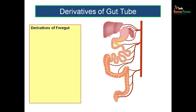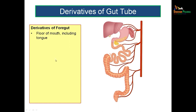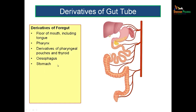Now let us see the derivatives of each part. The derivatives of the foregut include the floor of the mouth including the tongue, the pharynx, derivatives of the pharyngeal pouches, the thyroid, then the esophagus, then the stomach, then the duodenum — but only up to the upper half of the second part of the duodenum. The remaining part of the duodenum — the lower part of the second part as well as the third and fourth parts — is derived from the midgut.